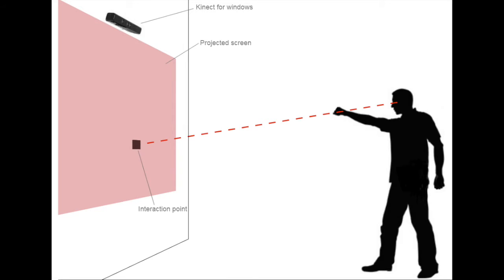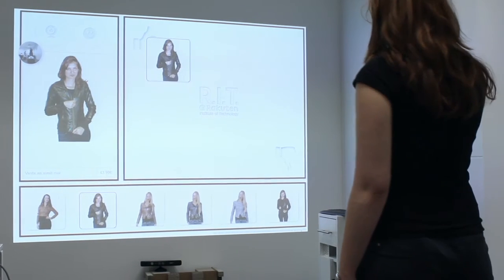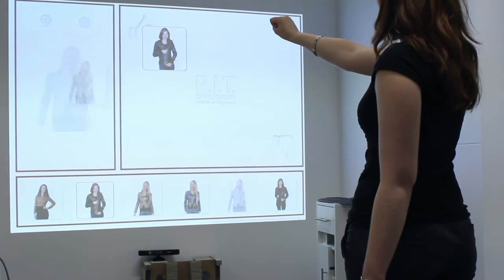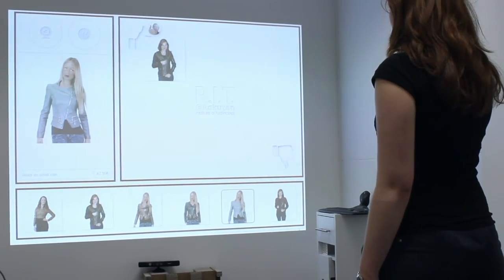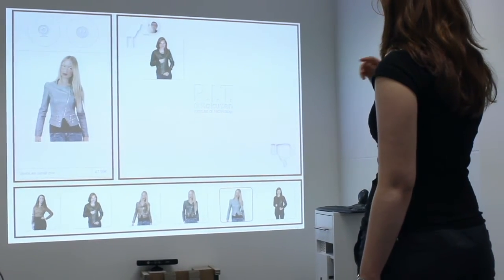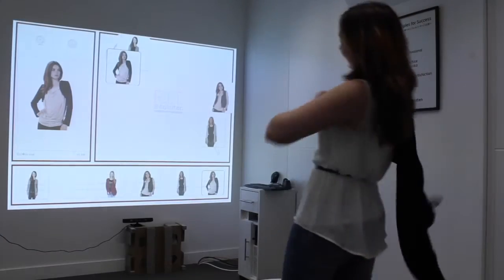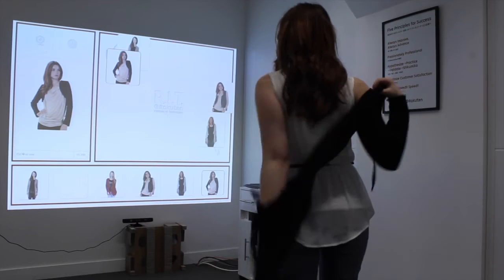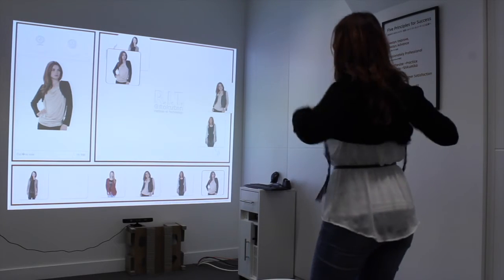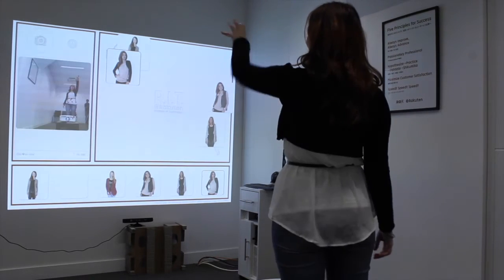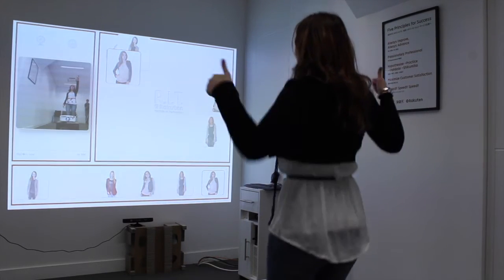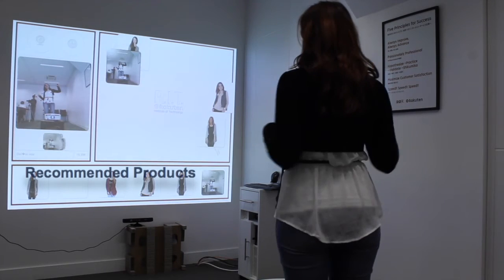In the store, people interact with Shoko using a natural gesture interface. Users face a big screen, and the touch-free interface enables them to interact with digital objects, just as they would do with real objects. The interface is large so you can see yourself, take a picture of yourself, and see recommended products.